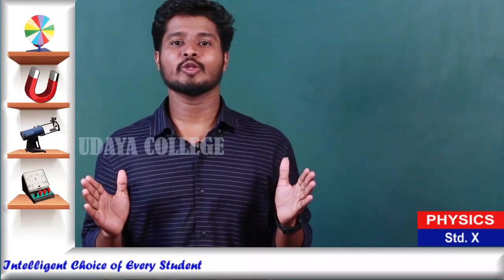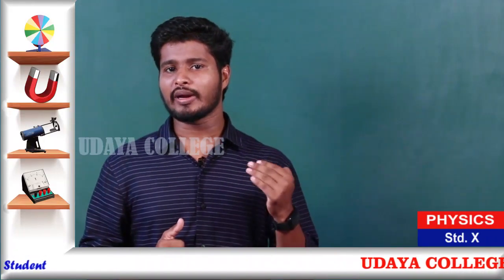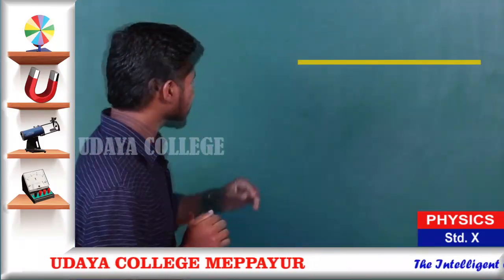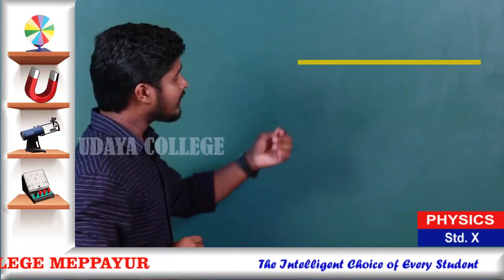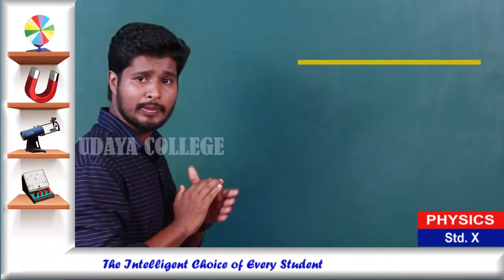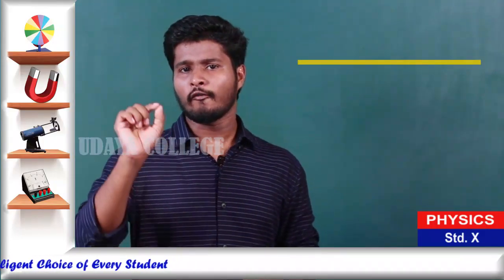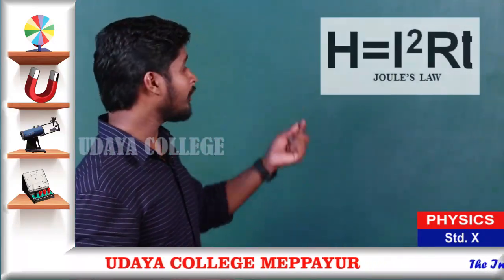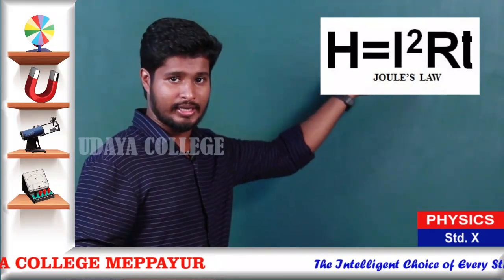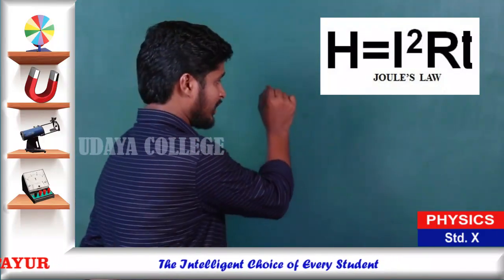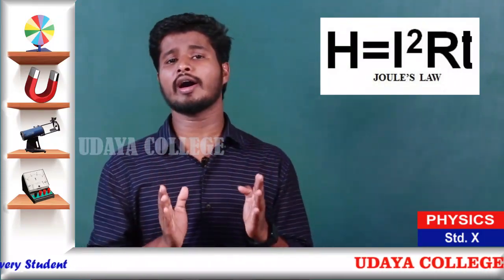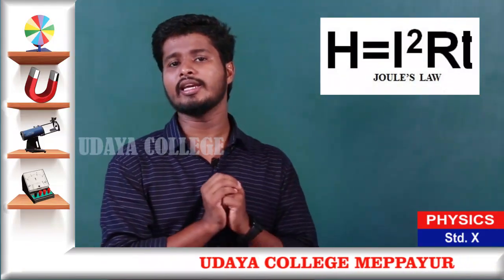Why should we stop here? The idea of Joule heating or Ohmic heating: in one second, the heat generated is H equals I squared R. This is called Joule's law, named after the scientist James Prescott Joule.